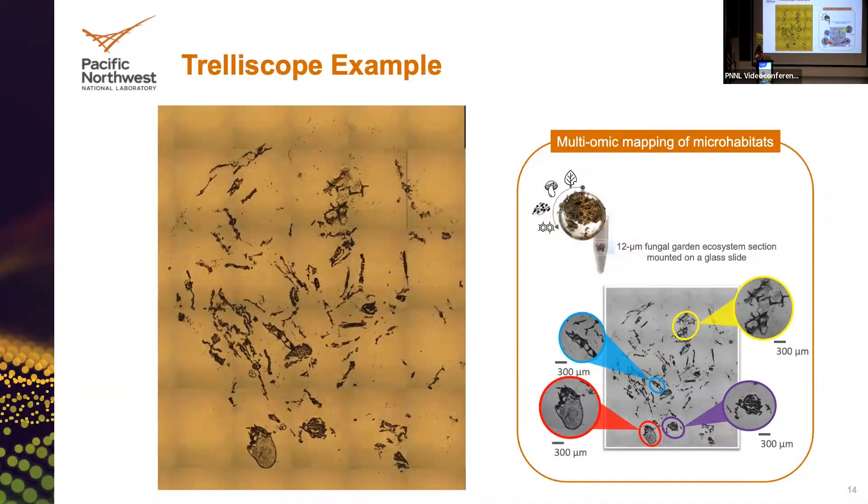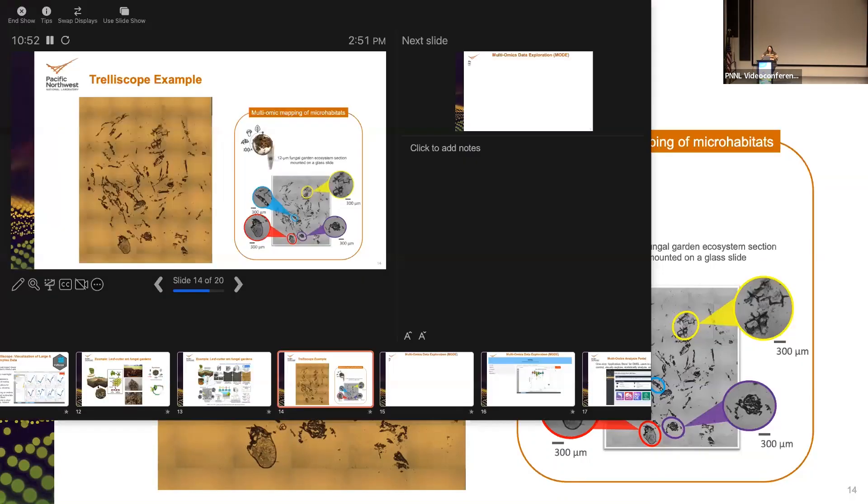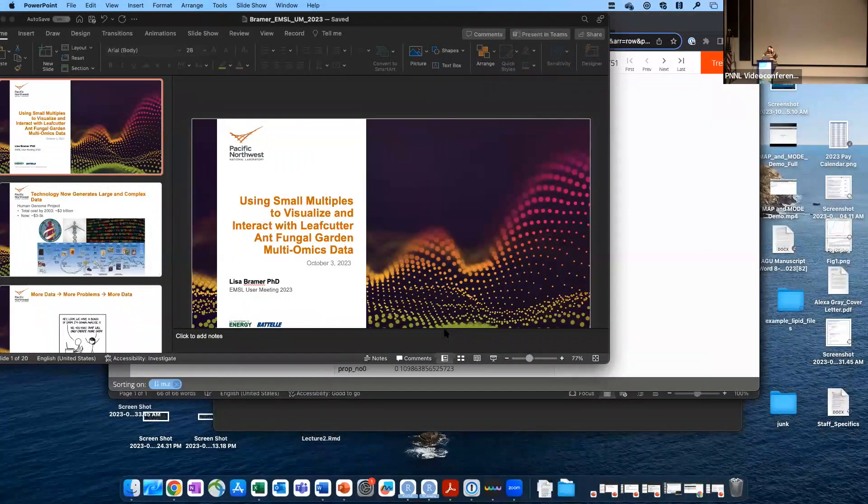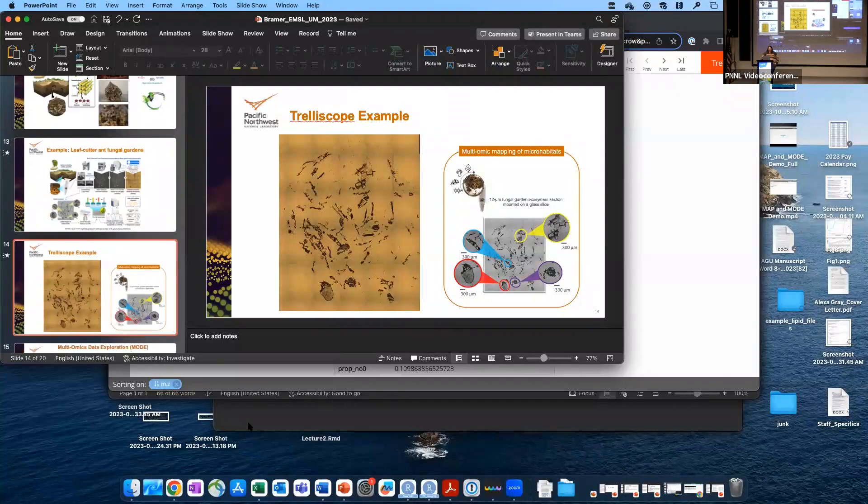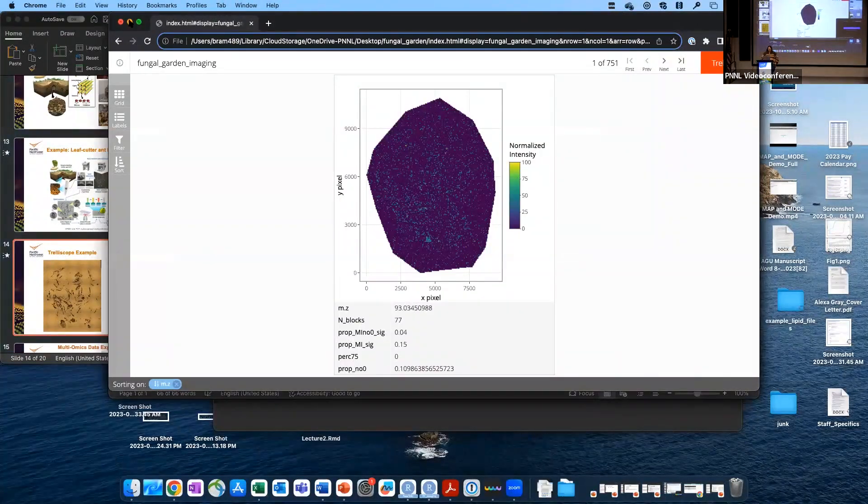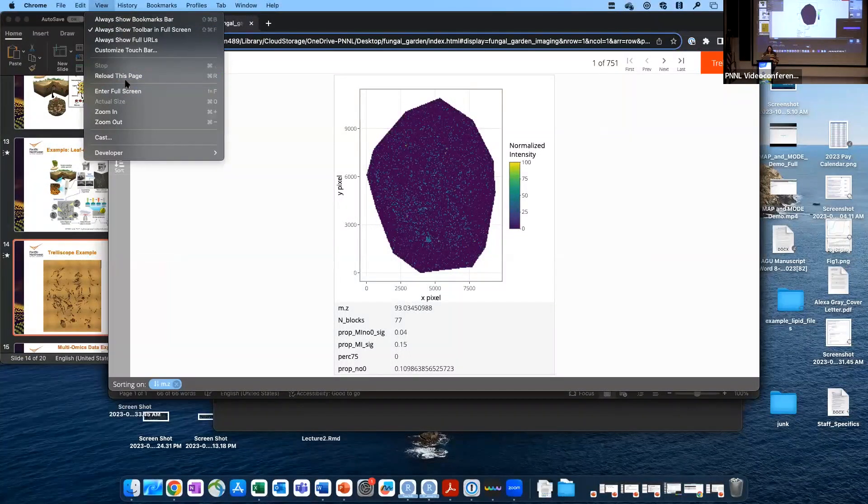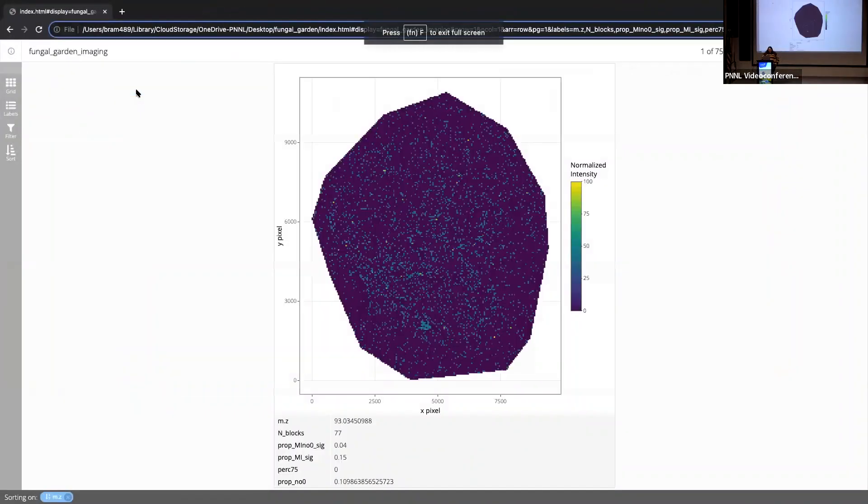So one of the studies that was done, this is a huge pipeline that Maria and Kristin would be happy to explain to you in detail, but I'm going to focus on what's at the top here. They took their fungal garden and they did spatial metabolomics on it and looked at what features they have and put that into Metaspace to try to do metabolite annotation. There's complementary spatial proteomics data that went with this. For today, I'm just going to talk about the spatial metabolomics. And I'm going to show you an example of Trelliscope. One thing I want to point out is at the bottom left of this image, you have an ant egg. And the rest of this is fungal material from that garden.